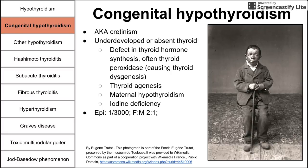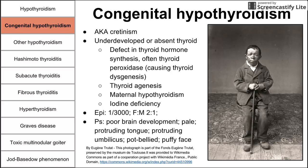The epidemiology is about 1 in 3,000, more female than male. Symptoms include poor brain development, pale skin, protruding tongue, protruding umbilicus, pot-bellied abdomen, and puffy face — remembered with the P's. Characteristic features include shorter stature, poor brain development, paleness, protruding umbilicus, pot-belly, and puffy face. That's cretinism.